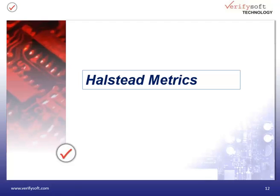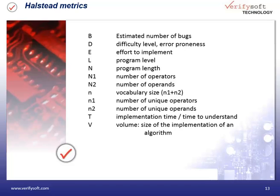The Halstead metrics are based on the number of operators and the number of operands. Derived from these two metrics, Halstead calculates a couple of values like the estimated number of bugs, the difficulty level, the volume, and many more. The formulas for the calculation are available from the CMT product page at VerifySoft.com.